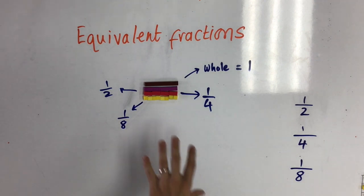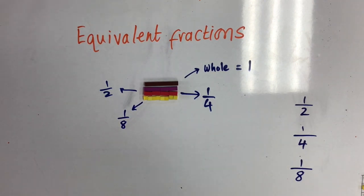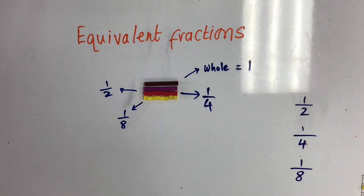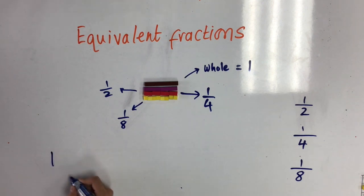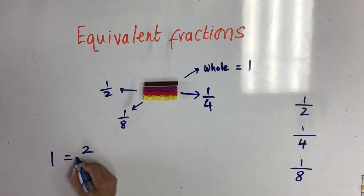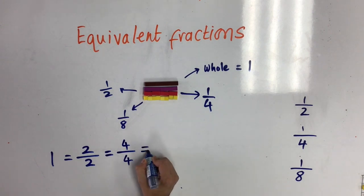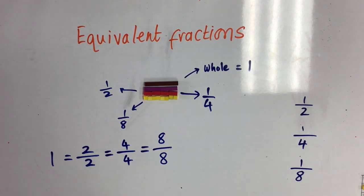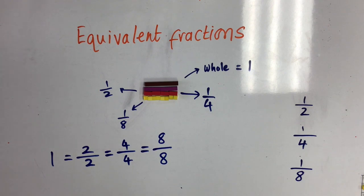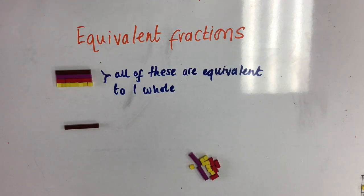Here you can see the brown rod that represents one whole, then the two halves that are the same as one whole, the four quarters that are the same as one whole, and the eight eighths that are the same as one whole. That means one is the same as two halves, which is the same as four quarters, which is the same as eight eighths. When we have fractions showing the whole, we just write one. Here you can see the different rods that are equivalent to one whole.